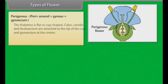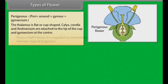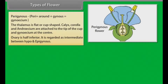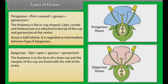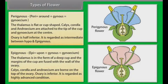In Perigynous flowers, the thalamus is flat or cup-shaped. Calyx, corolla and androecium are attached to the tip of the cup, and gynoecium is at the center. Ovary is half inferior. It is regarded as intermediate between hypogynous and epigynous. In Epigynous flowers, the thalamus is in the form of a deep cup and the margins of the cup are fused with the wall of the ovary. Calyx, corolla and androecium are born on the top of the ovary. Ovary is inferior. It is regarded as a highly advanced condition.